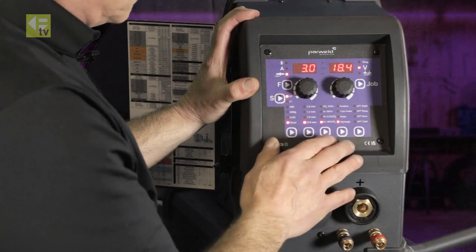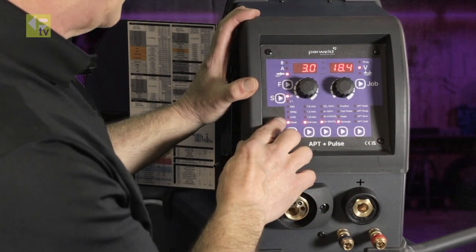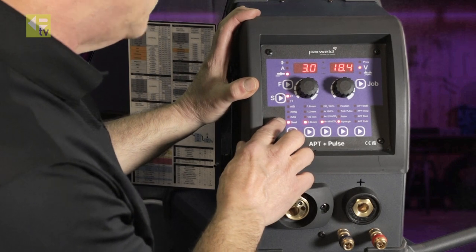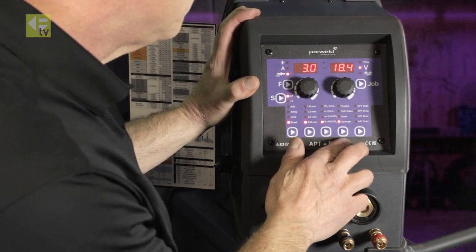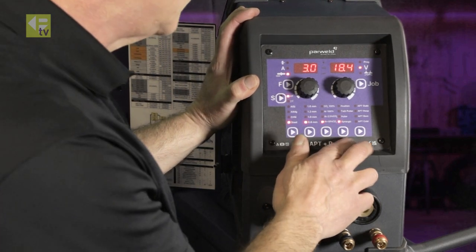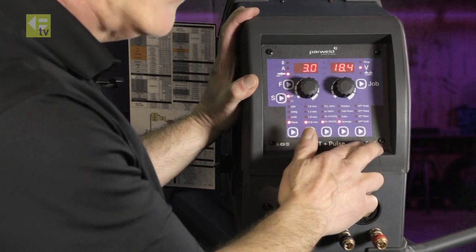In the bottom part of the screen now, we have a selection for materials, wire size, gases, and type of process that we're going to use along with some special processes.